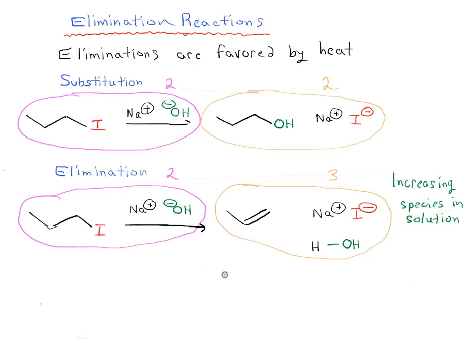When we increase the number of species in solution, there's going to be more disorder in the solution, which is commonly referred to as entropy — delta S. Elimination is going to have a higher delta S than substitution will, because with substitution we're not really changing the number of species in solution. So delta S is going to be very significant in the elimination reaction.